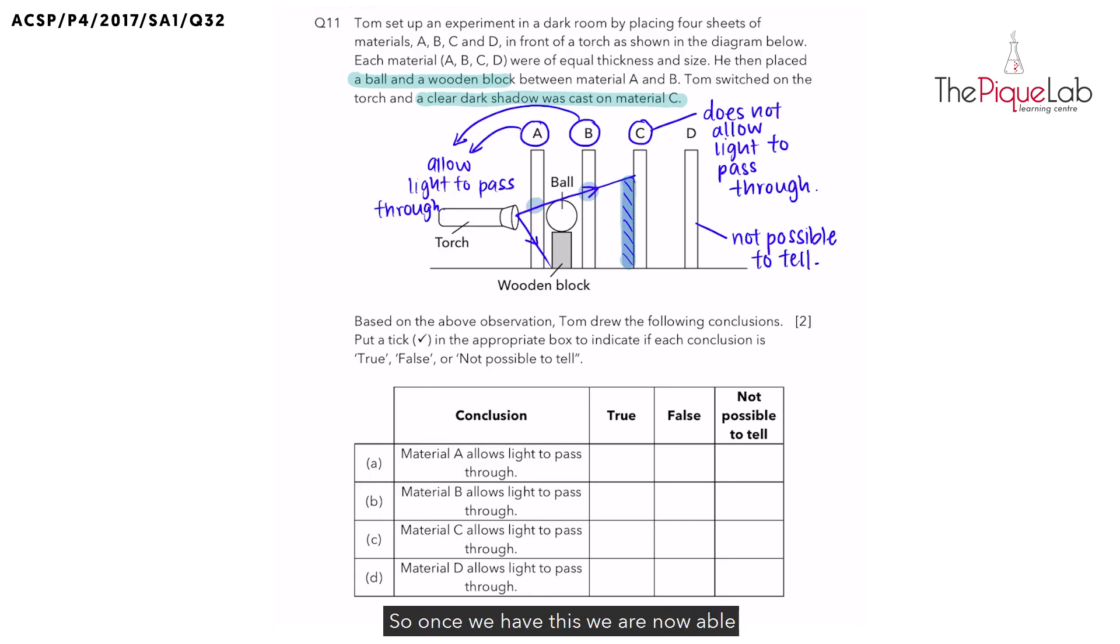Once we have this, we are now able to look at the conclusions that Tom has come up with. Conclusion A states, material A allows light to pass through. Is this correct? Yes, this is true.